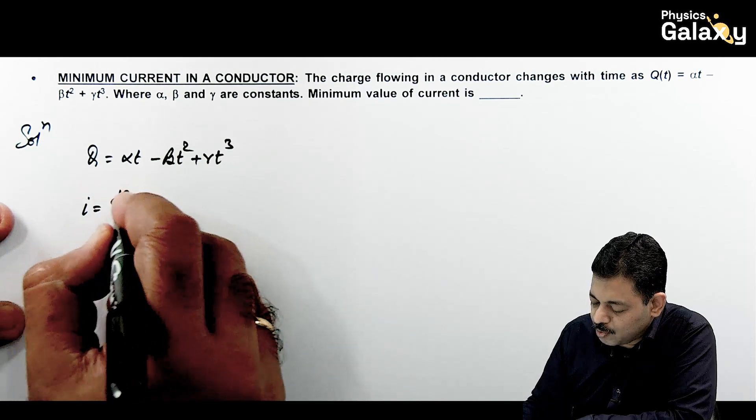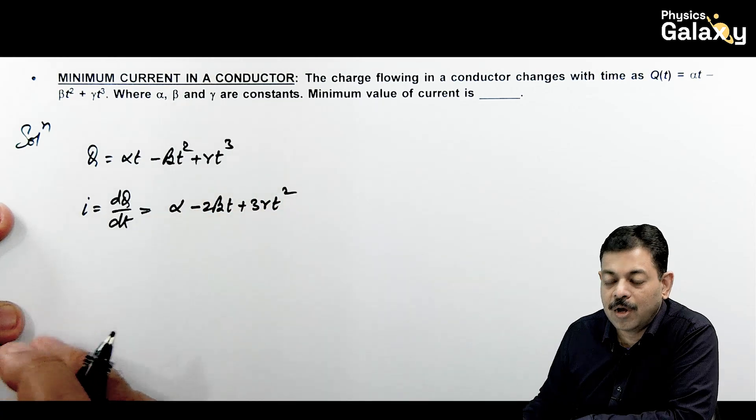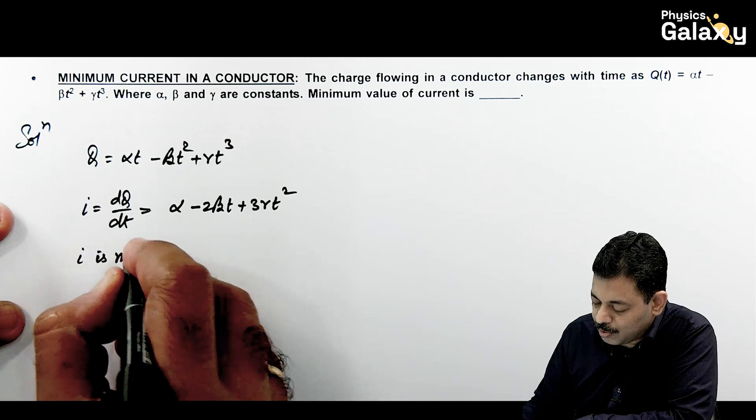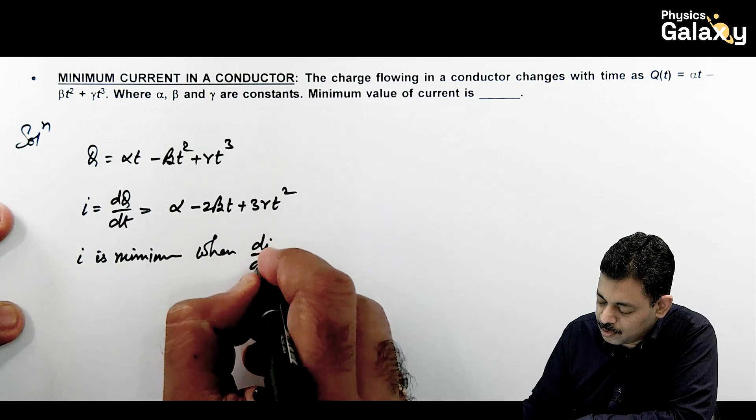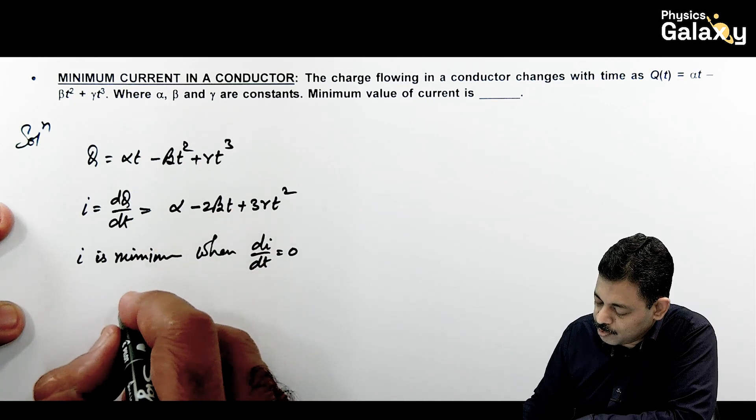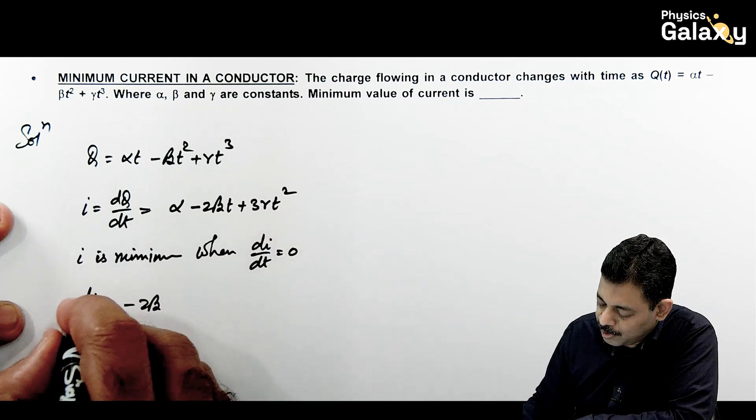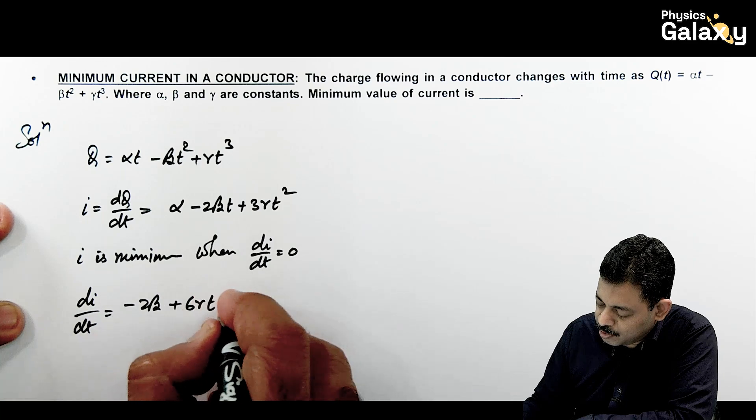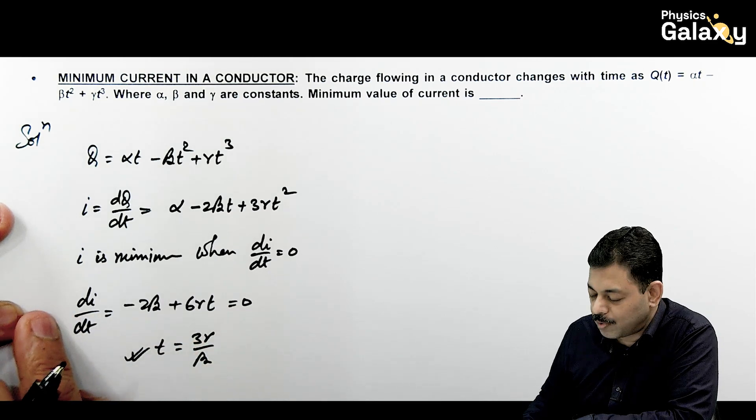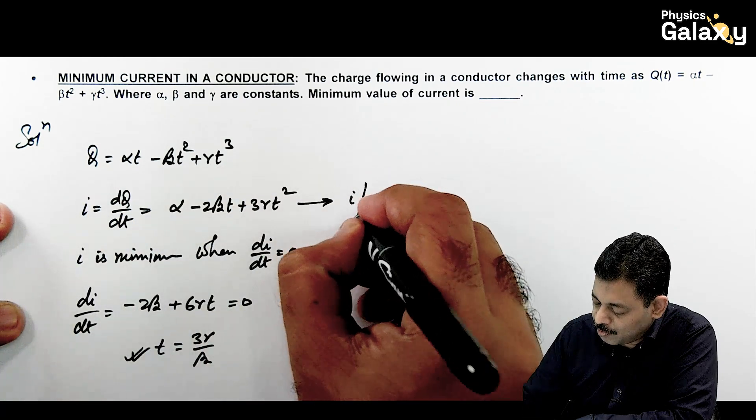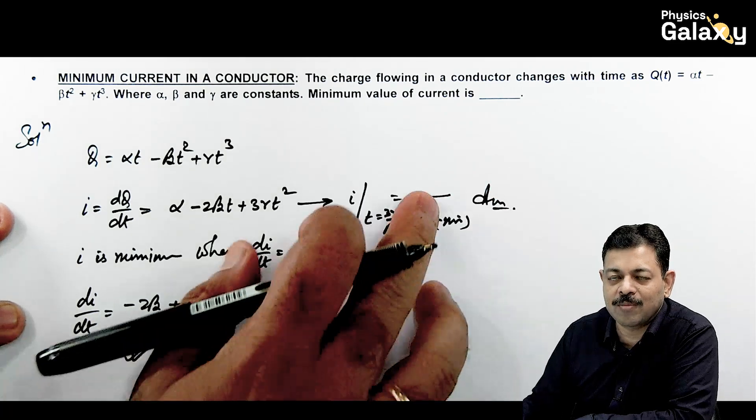Current can be given as dq/dt. If you simply differentiate, this gives α - 2βt + 3γt². Now we want to calculate the minimum value of current. I is minimum when we can write dI/dt should be equals to 0. If we differentiate current, this gives you -2β + 6γt should be 0. Value of t we are getting is β/3γ. So this is the time when current will be minimum. You can put t = β/3γ and calculate the minimum value of current. That I am leaving as an exercise for you.